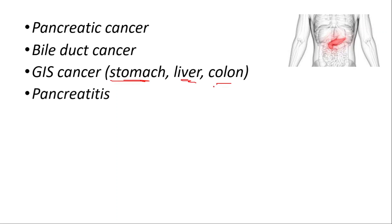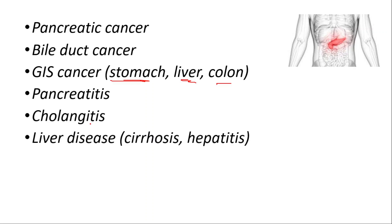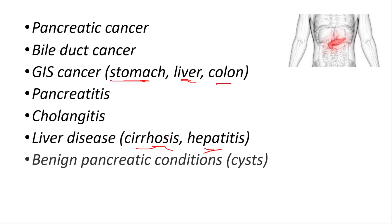Elevated CA-19-9 is also seen in pancreatitis — inflammation of the pancreas — cholangitis, which is inflammation of the bile duct, liver disease such as cirrhosis or hepatitis, and benign pancreatic conditions such as pancreatic cysts.